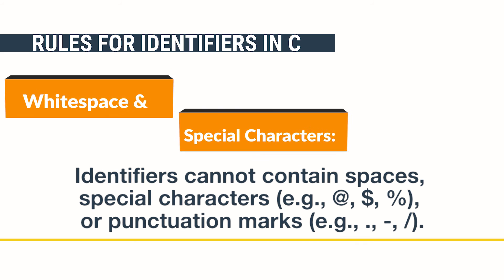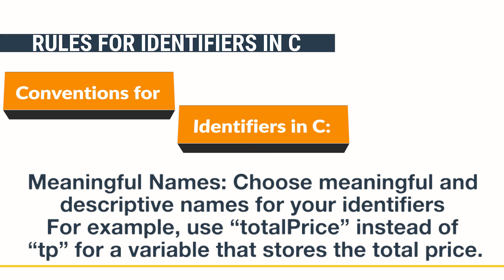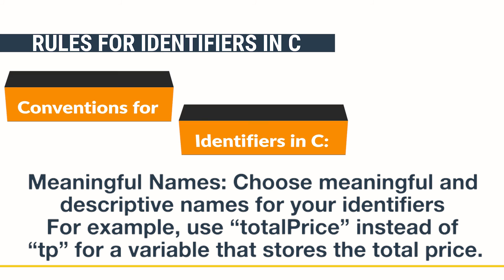Conventions for identifiers in C. Meaningful names: Choose meaningful and descriptive names for your identifiers to enhance code readability. For example, use total price instead of TP for a variable that stores the total price.